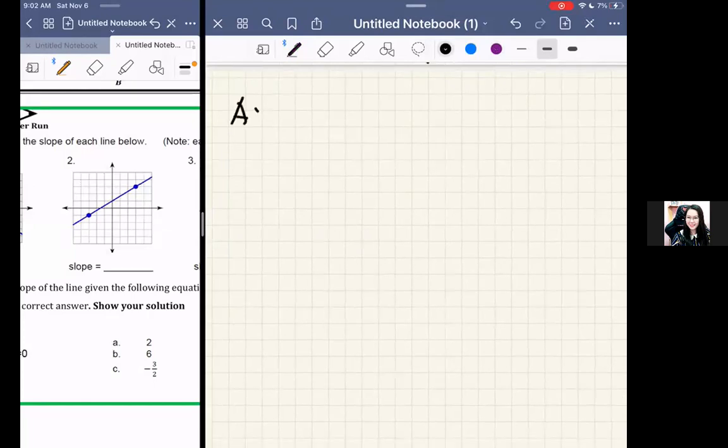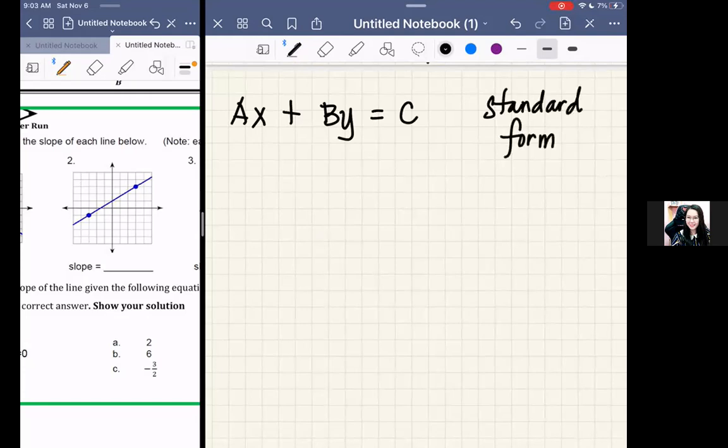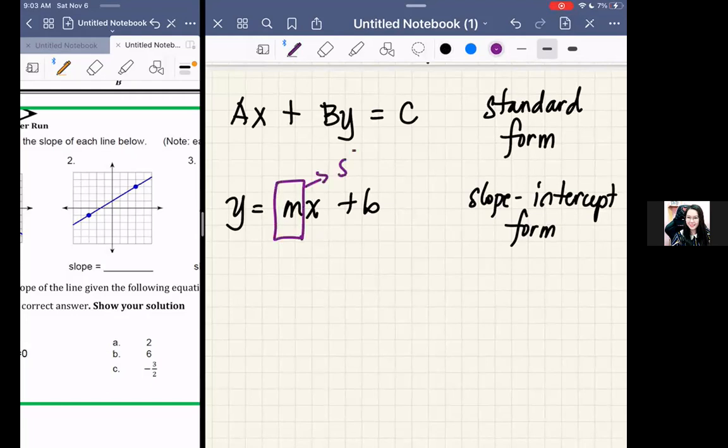We have Ax plus By equals C, and that is standard form. Now we have what's called slope-intercept form. That is y equals mx plus b, wherein the slope there is the letter m. For example, we have, let's say, x plus y equals 10, and that is standard form. We need to make it slope-intercept form, so slope-intercept again: y equals mx plus b.